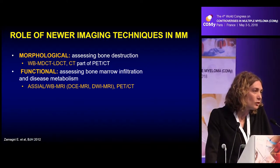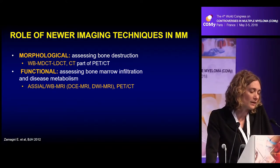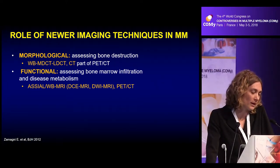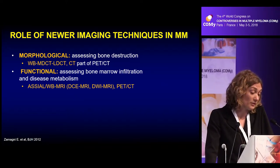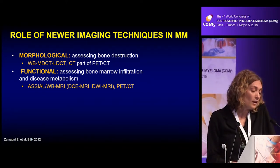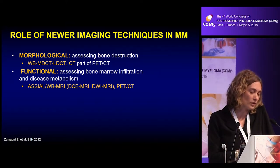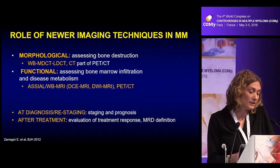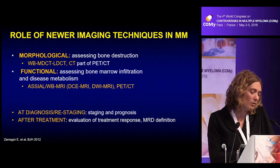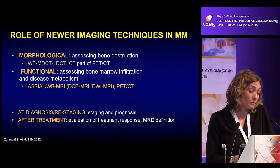The advantage of novel imaging techniques is that most have a morphological part assessing bone destruction and also a functional part assessing bone marrow infiltration or disease metabolism. This is the case for functional MRI techniques and PET-CT. Because of this dual capability — both morphological and functional — these techniques can be used for staging and also for evaluation of response to therapy.